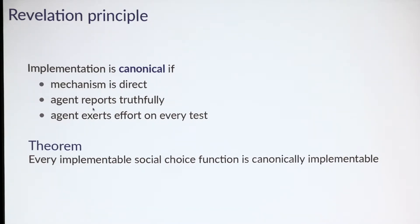This means when we're searching for implementable social choice functions, we can pin down without loss the agent strategy and only optimize over mechanisms subject to incentive constraints. The challenge in this setting is that mechanisms are very complicated. A mechanism specifies not only a decision rule but also a testing rule. Our goal next is to simplify or pin down that testing rule.